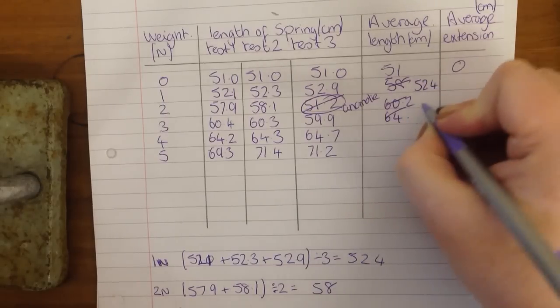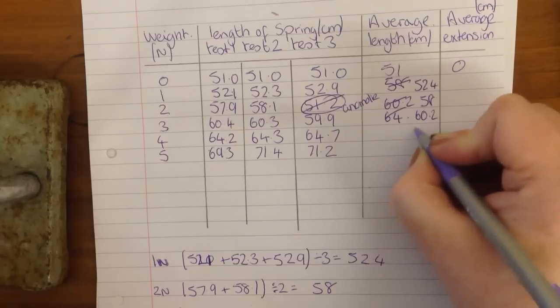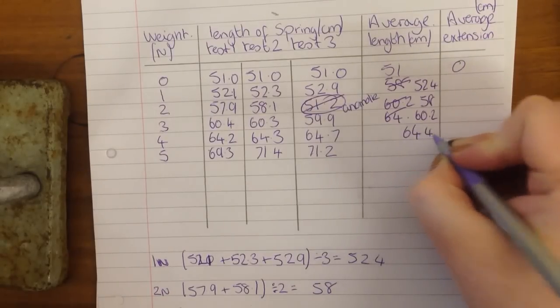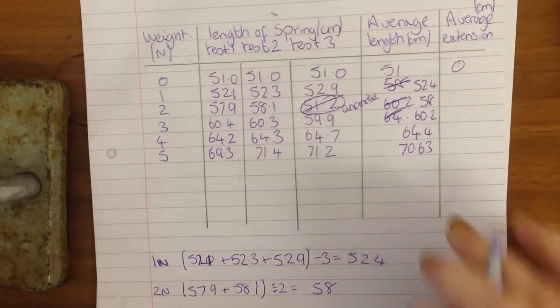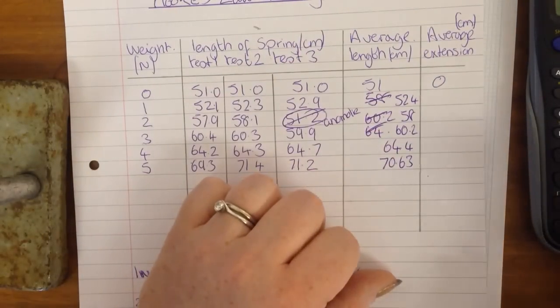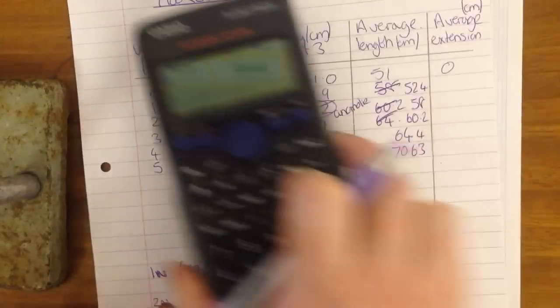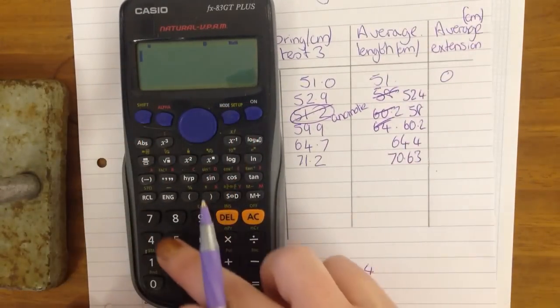52.4, 58, 60.2, 64.4 and 72.6. So this was the extension, that was the length that the spring went to. Now we need to work out the extension. And we do that by taking the unextended length, which is 51, off all of it. So 52.4 minus 51 equals 1.4.